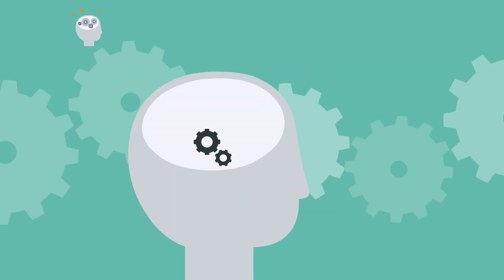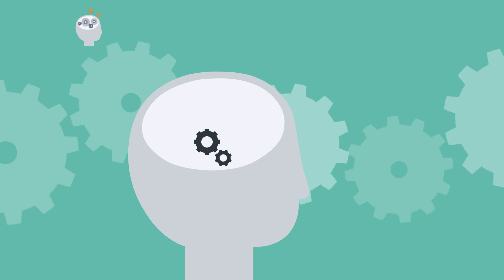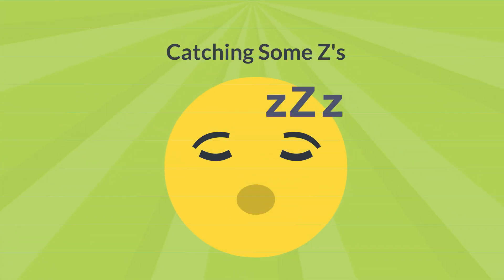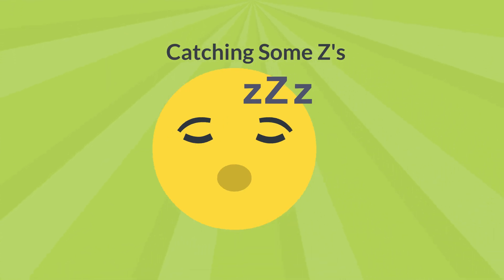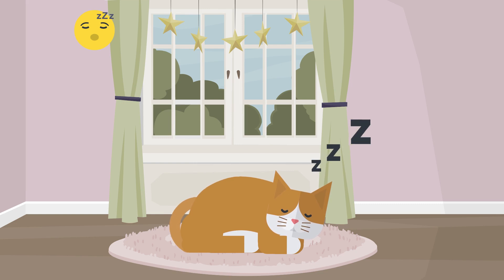A set of very small or poorly functioning gears can be depicted to indicate stupidity. Catching some Zs: When a character is sleeping, sometimes a lot of Zs are displayed near the character, in the form of a Z-stream from the character's mouth or head, or a group of Z-Z-Z contained in a speech bubble.